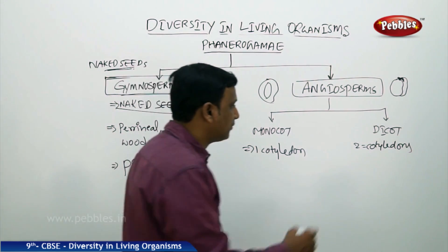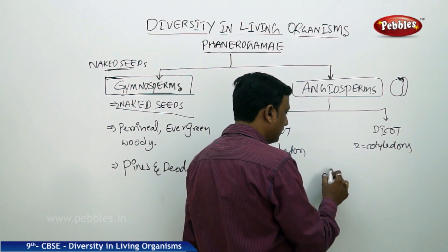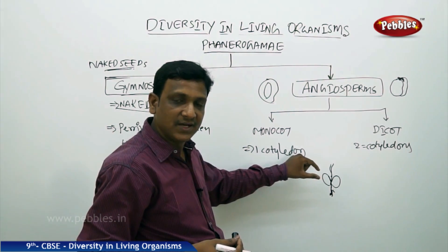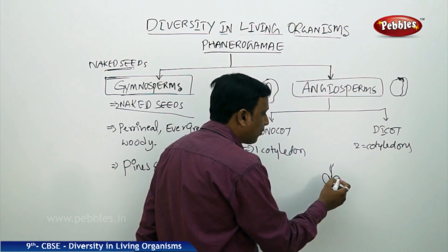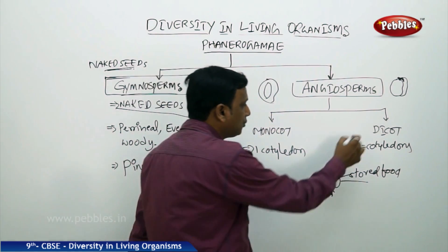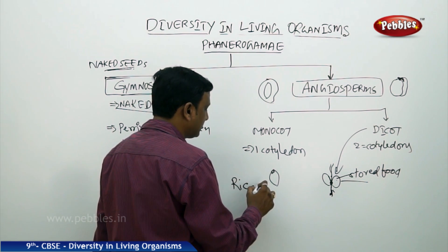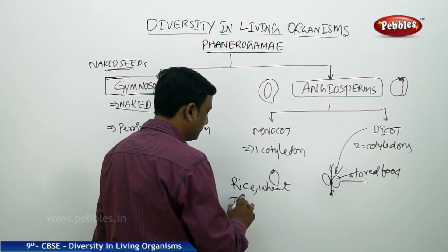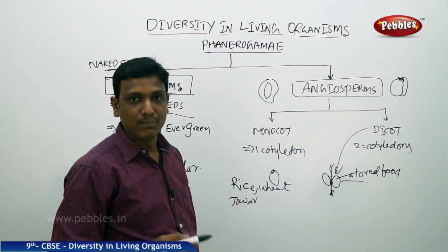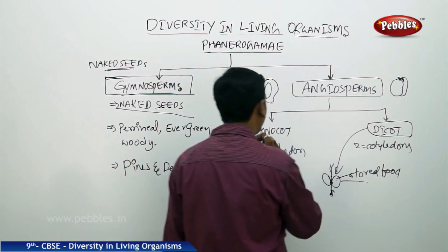What is a cotyledon? If you see a bean seed it will have two cotyledons. Once the seed germinates, the cotyledons become leaf-like structures. In dicot plants, the seed contains a tiny plant — the embryo is supported by cotyledons which contain stored food to help the embryo grow. Two cotyledons in case of a dicot, and only one cotyledon for a monocot. Examples of monocots are all grass plants: rice, wheat, jowar, bajra, all cereal plants, grass, bamboo. Dicots include mango, peas, and beans — if you break the seed and get two equal halves, it is a dicot plant.